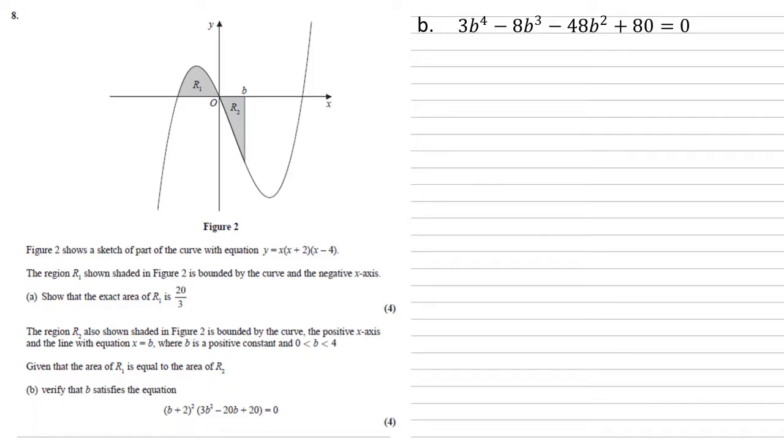So we've got an expression on the left-hand side, but it's not in the form that the question is asking for. The question wants that b plus 2 all squared at the beginning. So to do that, we're going to do some division to factorise it out. So b plus 2, we're going to divide it into the 3b to the 4 minus 8b cubed minus 48b squared plus 0b, I've put that in there as a placeholder, plus 80. So to do our long division, we've got b plus 2.